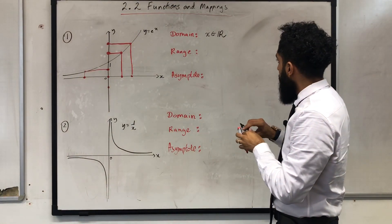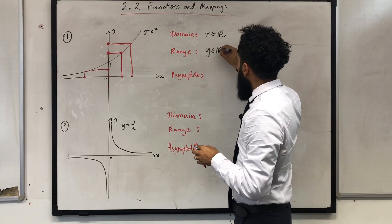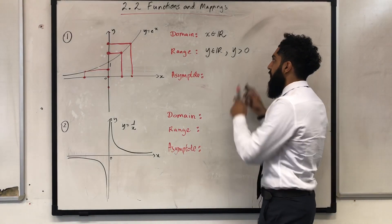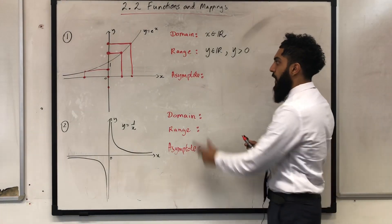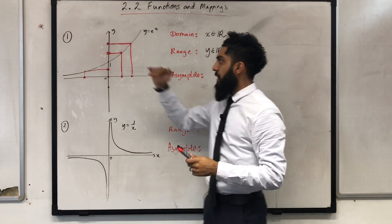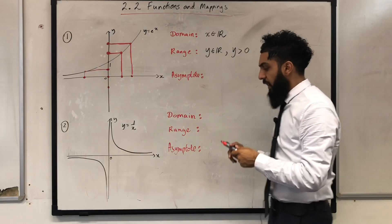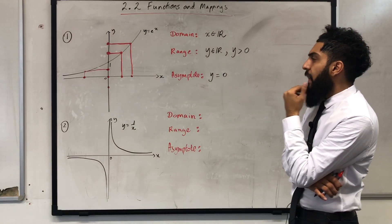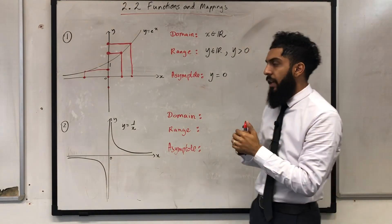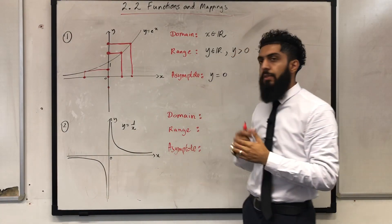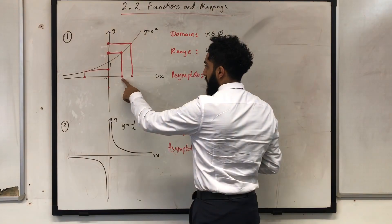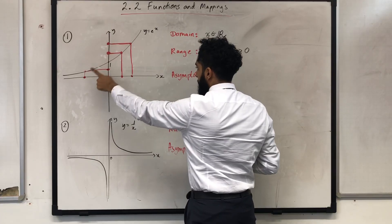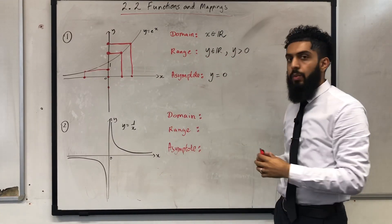So y is a real number with the restriction that y > 0. The equation of the asymptote is y = 0, which is the x-axis. Looking at the graph, each x value gets mapped to a unique y value, so we have a one-to-one function.